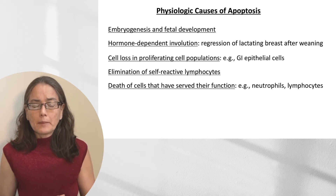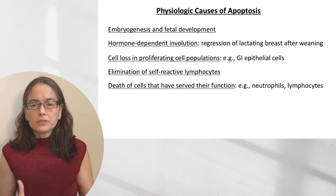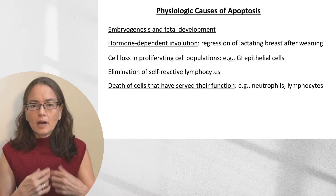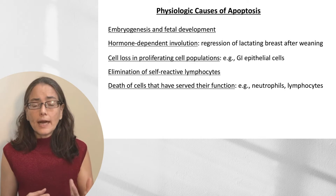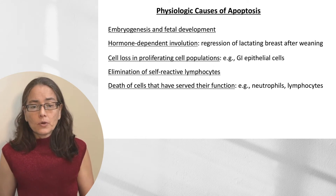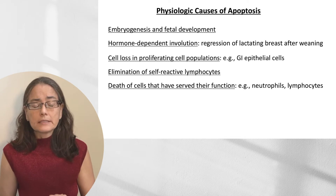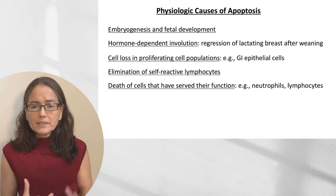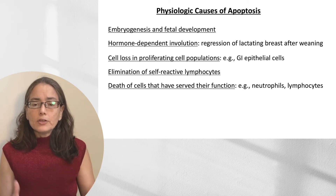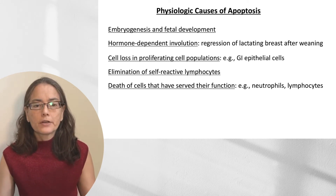We also see cell loss in proliferating cell populations. The lining of the GI tract mucosa is constantly proliferating, and when cells reach the end of their lifespan, they need to die tidily without causing massive inflammation. From immunology, you know that self-reactive lymphocytes must be eliminated through apoptosis. And when neutrophils and lymphocytes complete their job after a massive infection, they too undergo apoptosis rather than calling in more inflammatory cells.